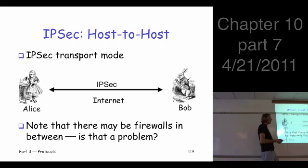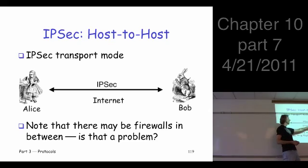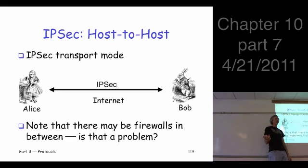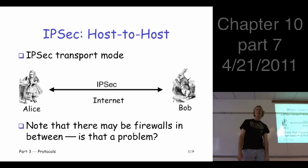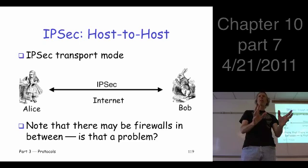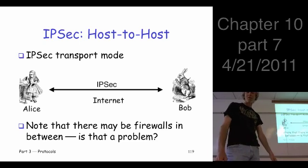The problem is there may be firewalls. Alice may have a firewall, or Bob may have a firewall. Is that a problem? Yes, just like we said — the TCP stuff gets encrypted, the HTTP data is encrypted. You certainly couldn't have an application proxy; they wouldn't be able to see the data. Even a simple port filtering thing would have trouble because it couldn't see the TCP info or socket information. So it's an issue if there are firewalls.